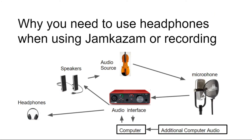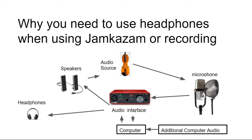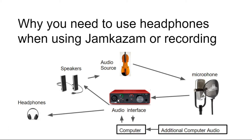Why do you need headphones when using Jamkazam? The signal path starts with the sound source — a violin, cello, or some instrument — and that sound gets picked up into a microphone. That signal gets sent to the audio interface, which converts it from an analog signal to a digital signal and sends it to the computer. In the computer, if you're using Jamkazam or recording along with previously recorded sounds, it will add additional computer audio and send it back into the audio interface. If you use speakers, the sound will go back into the audio source and get picked back up by the microphone, completing a feedback loop — a very bad thing. So when using Jamkazam or recording with open microphones, you need to use headphones so that the sound source stops at the headphone.